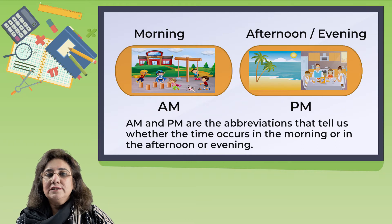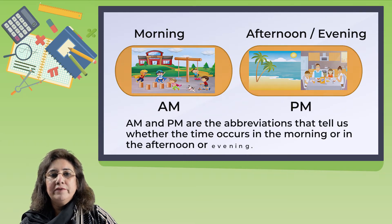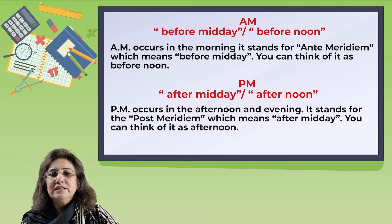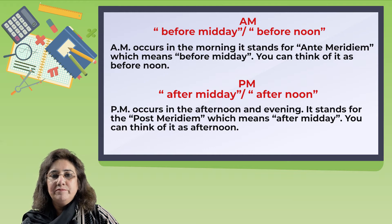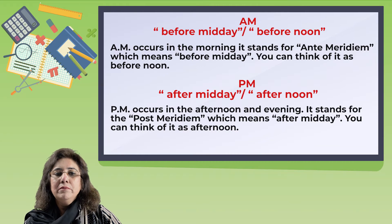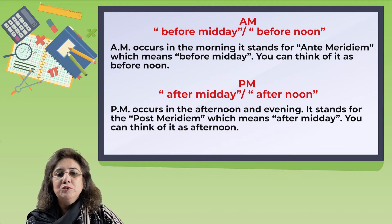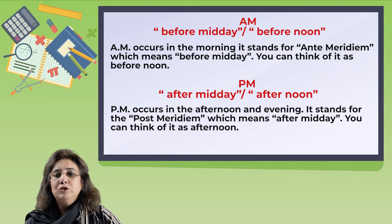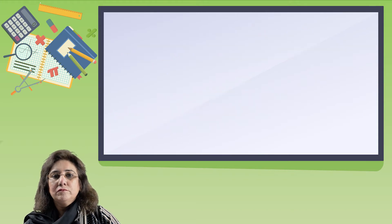AM and PM are the abbreviations that tell us whether the time occurs in the morning or in the afternoon or evening. AM occurs in the morning — it stands for ante-meridian, which means before midday. You can think of it as before noon. PM occurs in the afternoon and evening — it stands for post-meridian, which means after midday. You can think of it as afternoon.